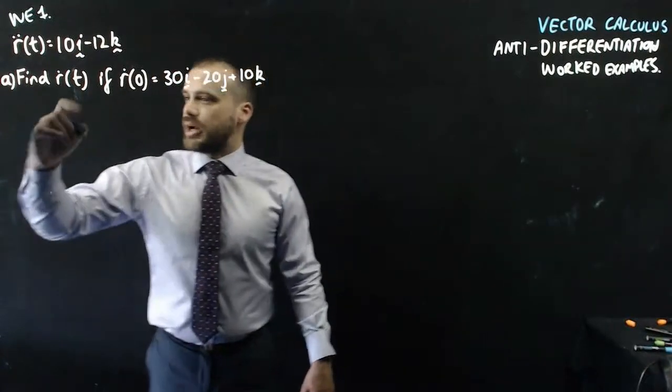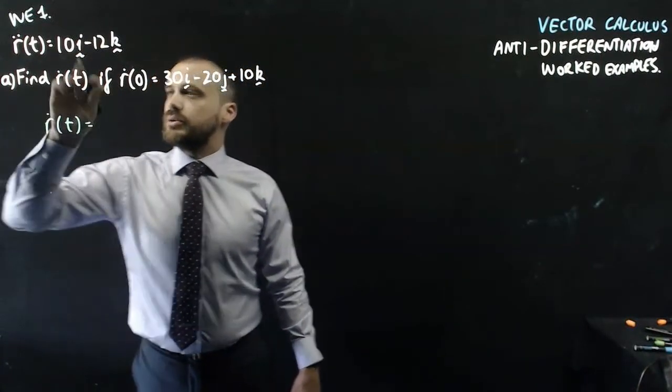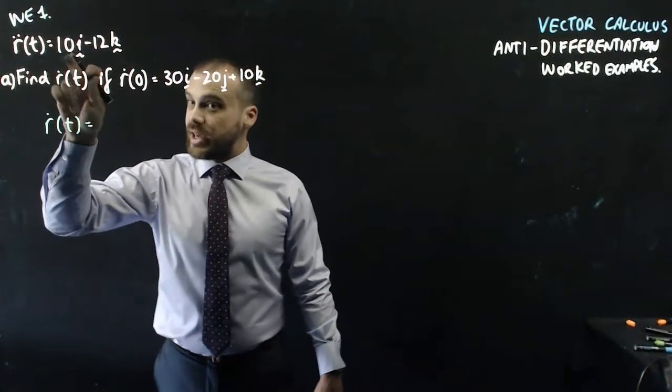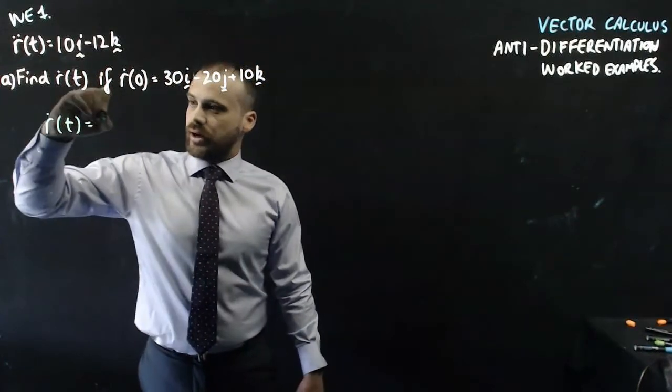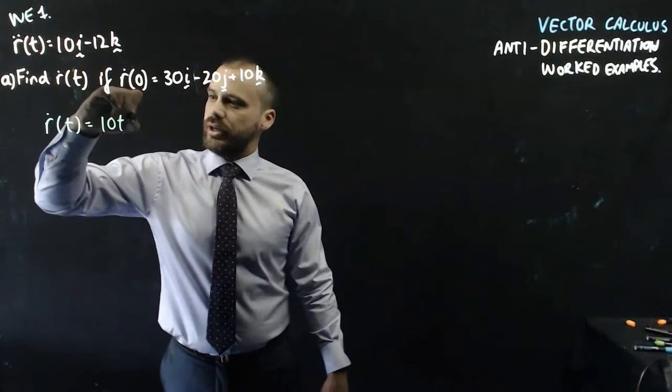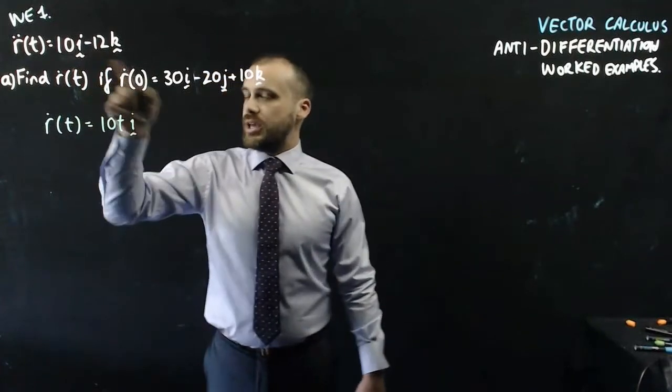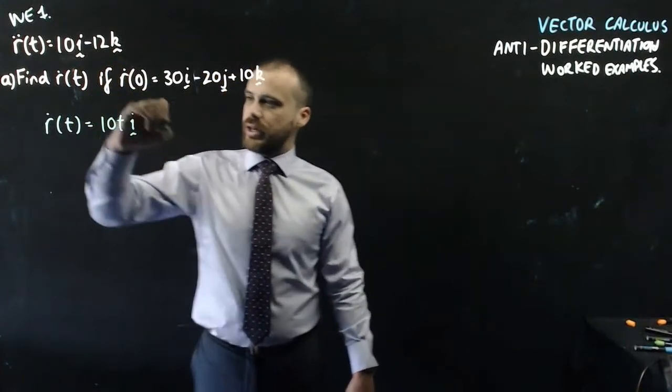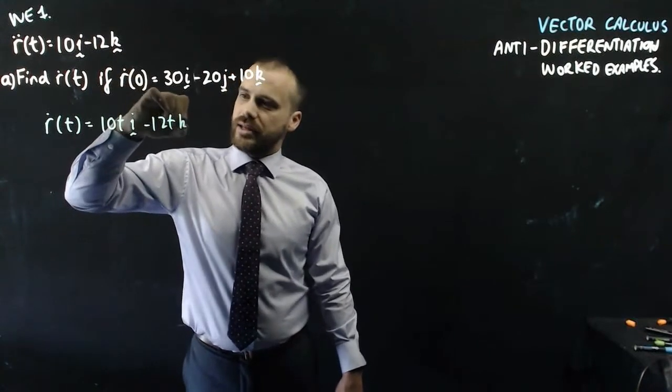So let's do it. R dot t equals. Now if I anti-derive 10, I get 10t, i. And if I anti-derive negative 12, I get negative 12t and the k there.